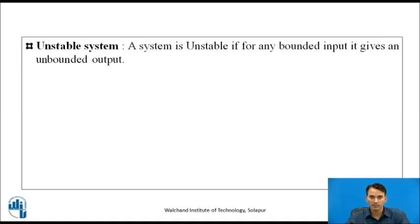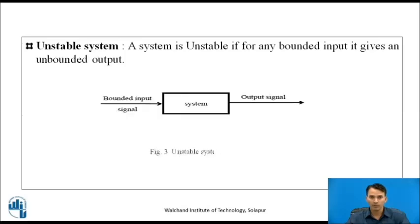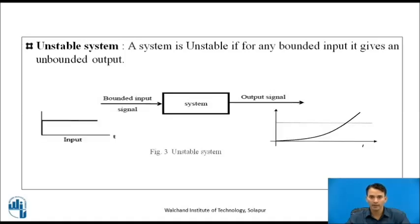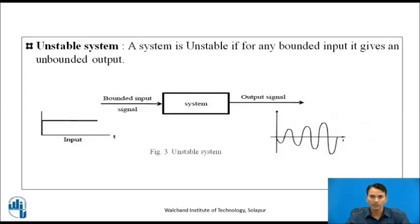An unstable system is one where, for any bounded input, it gives an unbounded output. In the block diagram, the input is always a bounded signal but the output may be unbounded. For the same bounded input, if the output grows to infinity for first order, or is a growing sinusoidal signal for second order, then such a system is known as an unstable system.